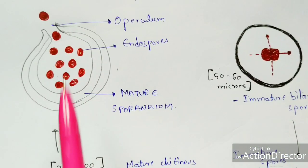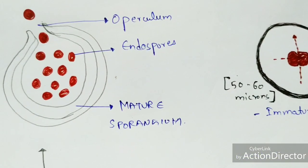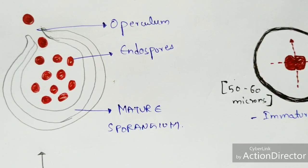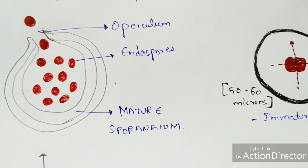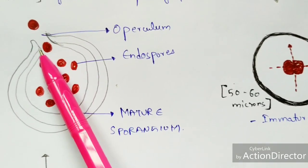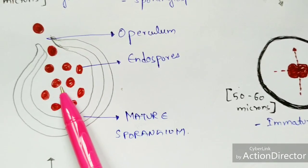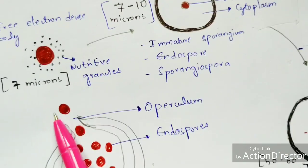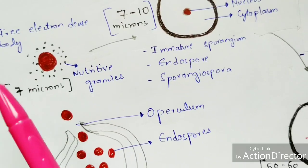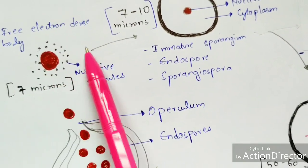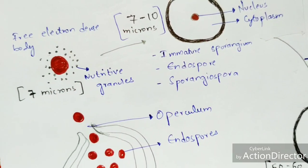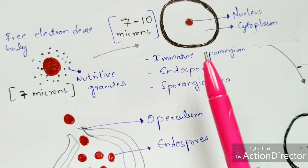As the mature sporangia become bulged, the cell wall breaks down. The opening formed is called the operculum. Through this operculum, the mature endospores present inside the cytoplasm get protruded out. They are released in the form of free electron dense bodies — so called because they are surrounded by nutritive granules — with a size of up to 7 microns.